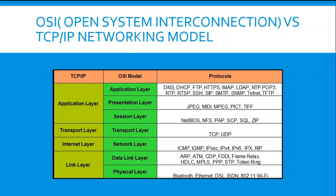For the presentation layer in OSI, we have JPG, MIME, MPG, PICT, and TIFF. On the session layer, we have NetBIOS — some of you might know it — NFS, PAP, SCP, SQL, and ZIP.